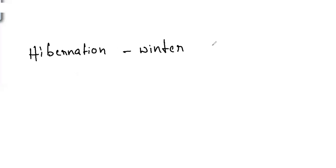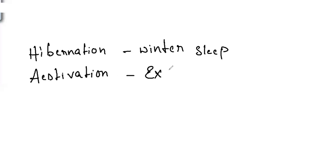Amphibians are cold-blooded (poikilothermic). They undergo hibernation, which is winter sleep, and estivation, which is summer sleep. Estivation is also seen in extreme hot conditions, while hibernation occurs in extreme cold conditions.